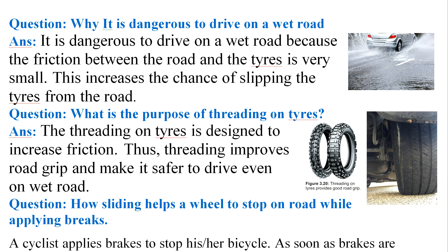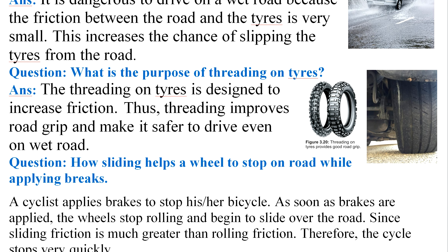Write the question and answer in your notebook. The next question is: what is the purpose of threading on tires? For example, if you are going to a hilly area like Murree and the road is wet, the car may slip. To avoid this, we use a tire with greater threading. The answer is that threading on tires is designed to increase friction, and thus the threading improves road grip.